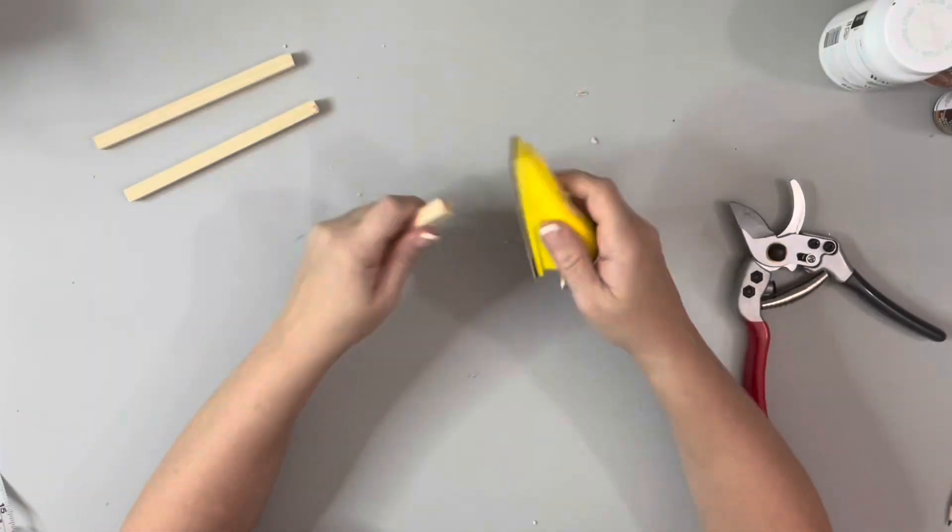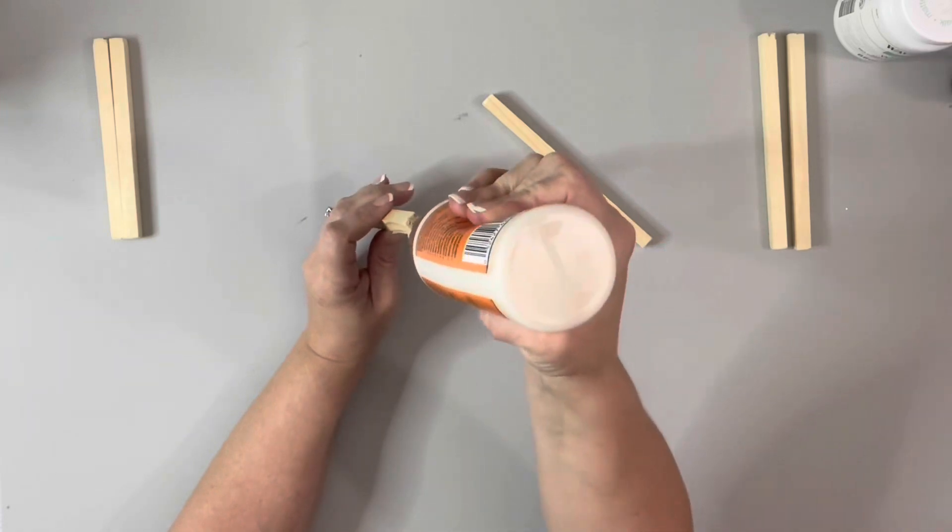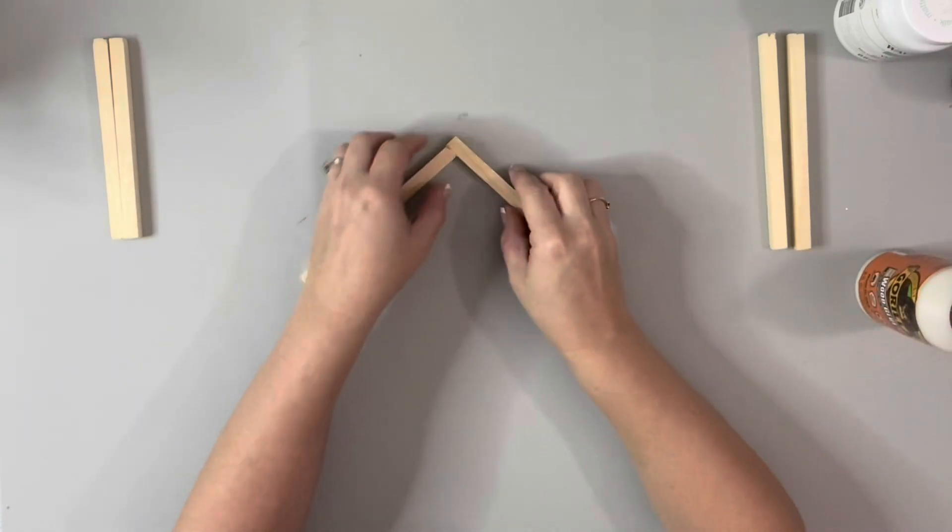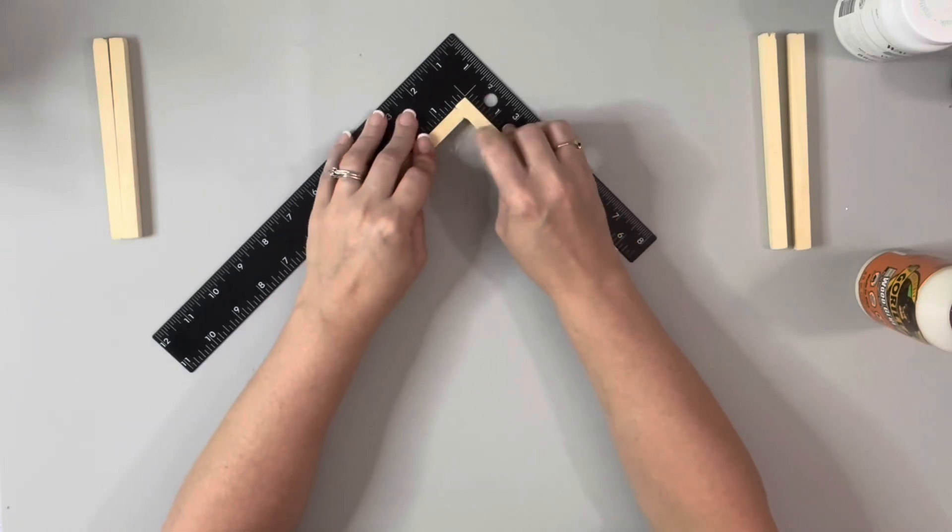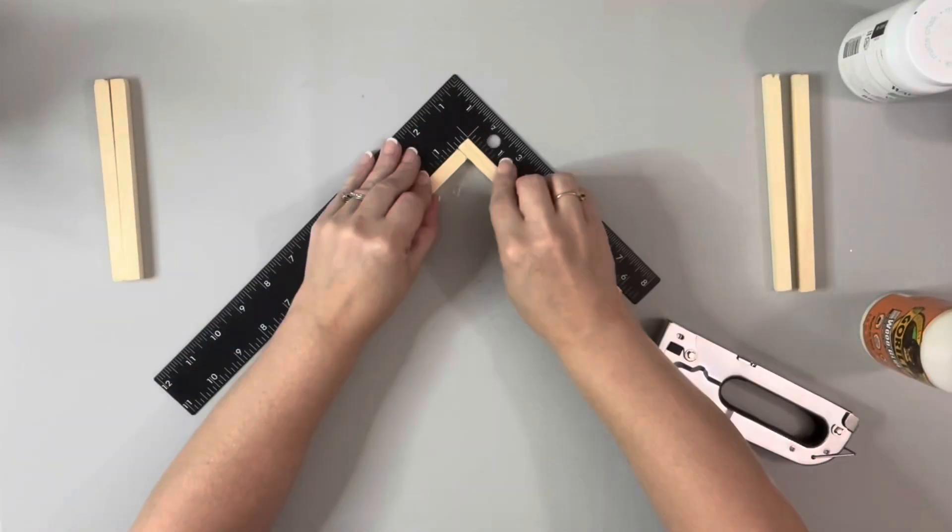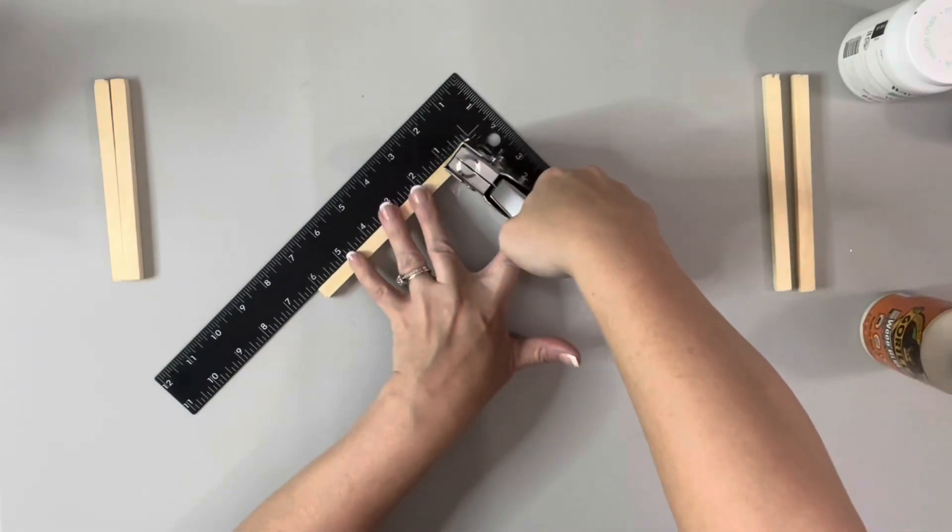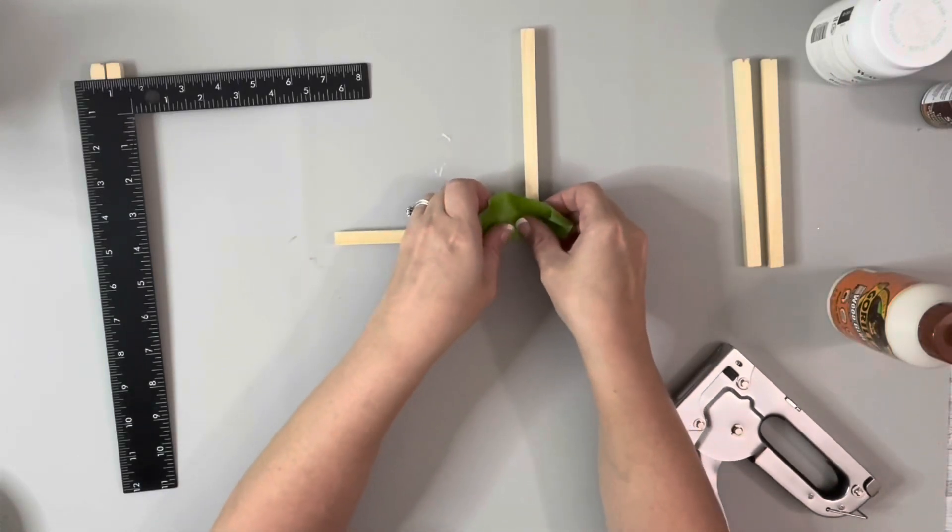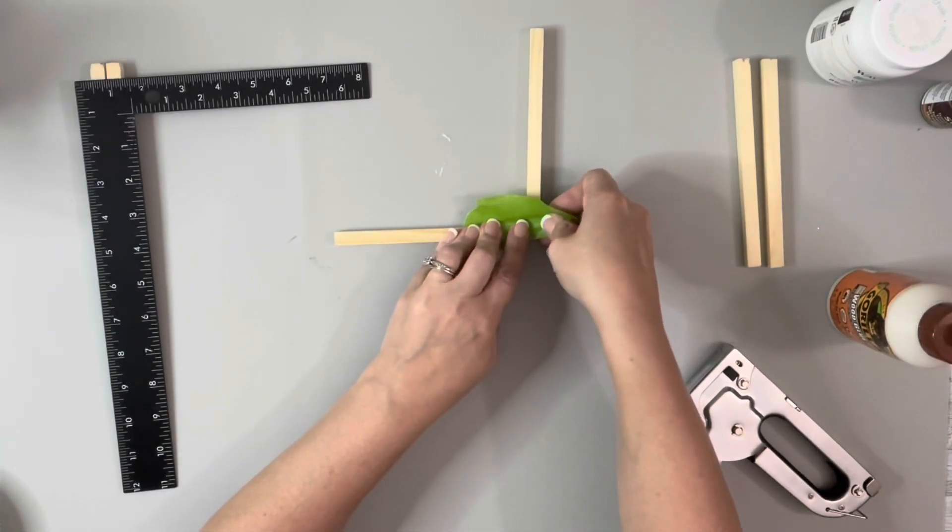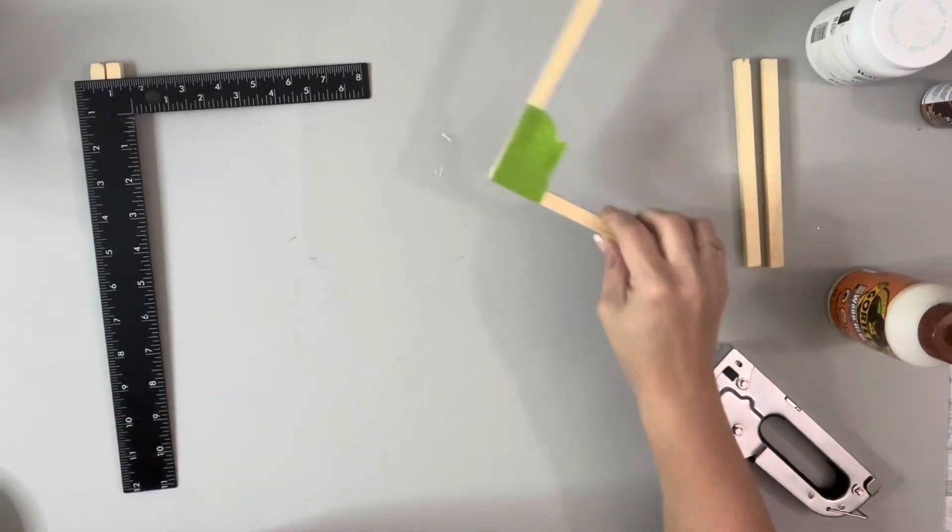After the pieces were all cut, I sanded all of the edges. I then took one of the six inch pieces and one of the five and a half inch pieces and used wood glue to glue them together at a 90 degree angle, then added a couple of staples where they were connected just for extra stability and used some painter's tape to tape them together while they dried. I made three of those.